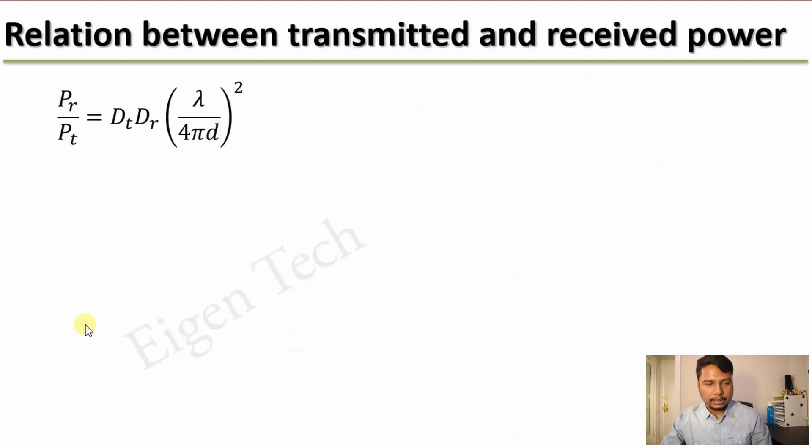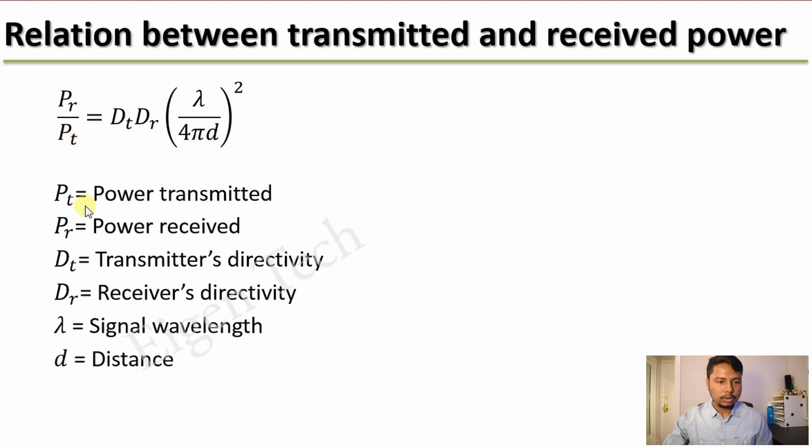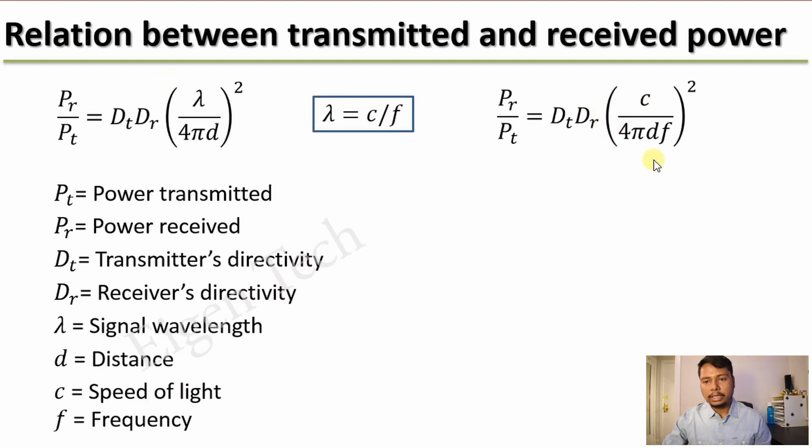Next, we will do some math. If you go to Wikipedia and search for free space path loss, you will find this expression. This is the ratio of received power to the transmitted power by an isotropic antenna. Pt and Pr is the transmitted and received power. Dt and Dr are the directivity of the transmitter and receiver's antenna. Lambda is the wavelength of the signal and d is the distance. If we use this equation, lambda equals c divided by f where c is the speed of light and f is the frequency, then this expression can be rewritten in this more useful format. FSPL, which is a loss, is basically the inverse of this expression.